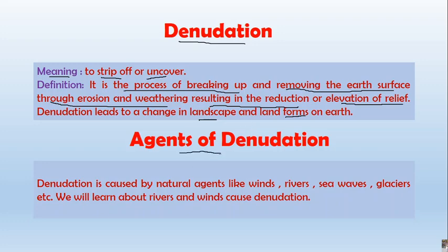Now, the agents of denudation include winds, rivers, sea waves, glaciers, etc. According to your ICSE syllabus, you have to study two agents of denudation — rivers and winds — how they cause denudation, and what landforms are formed as a result.